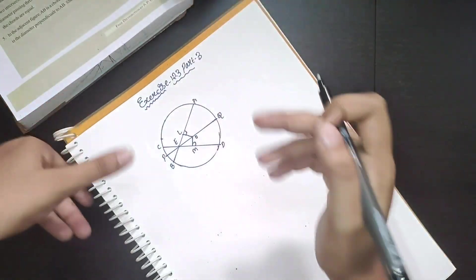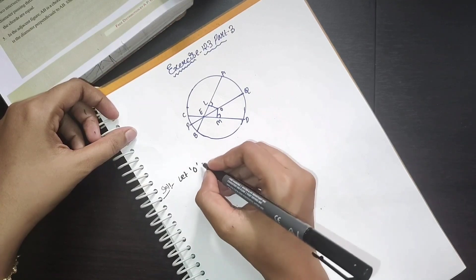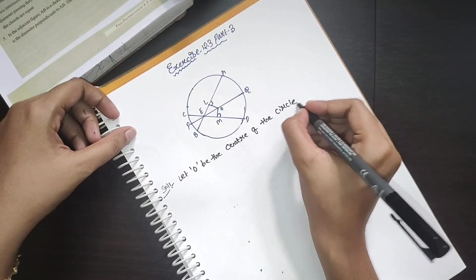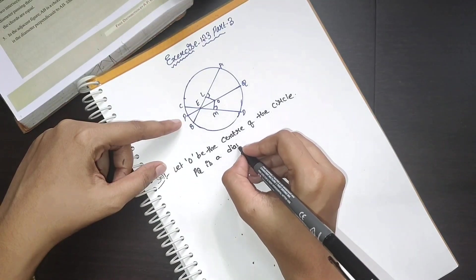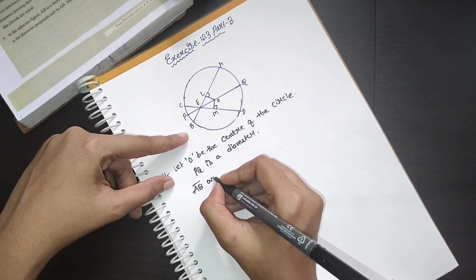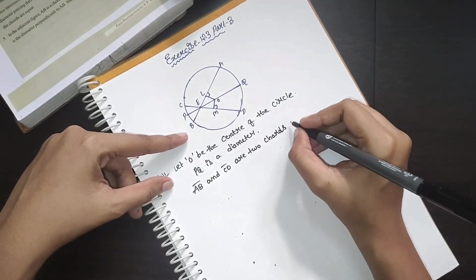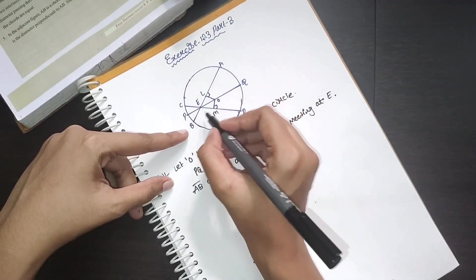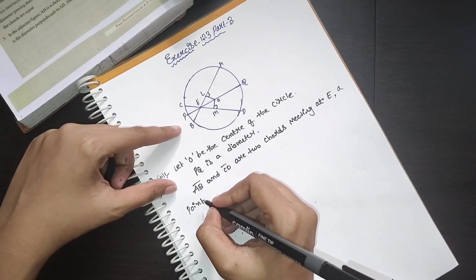We can prove it. Let O be the center of the circle. Next, PQ is a diameter. AB and CD are two chords meeting at point E.